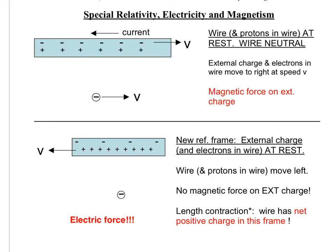There will, however, be a magnetic force. The leftward current will produce a magnetic field in the region of the moving charge that is out of the page. The charge moving through the magnetic field will then feel a force according to the Lorentz force law. Using your preferred implementation of the right-hand rule, you can determine that the magnetic force on this moving charge will be toward the wire.